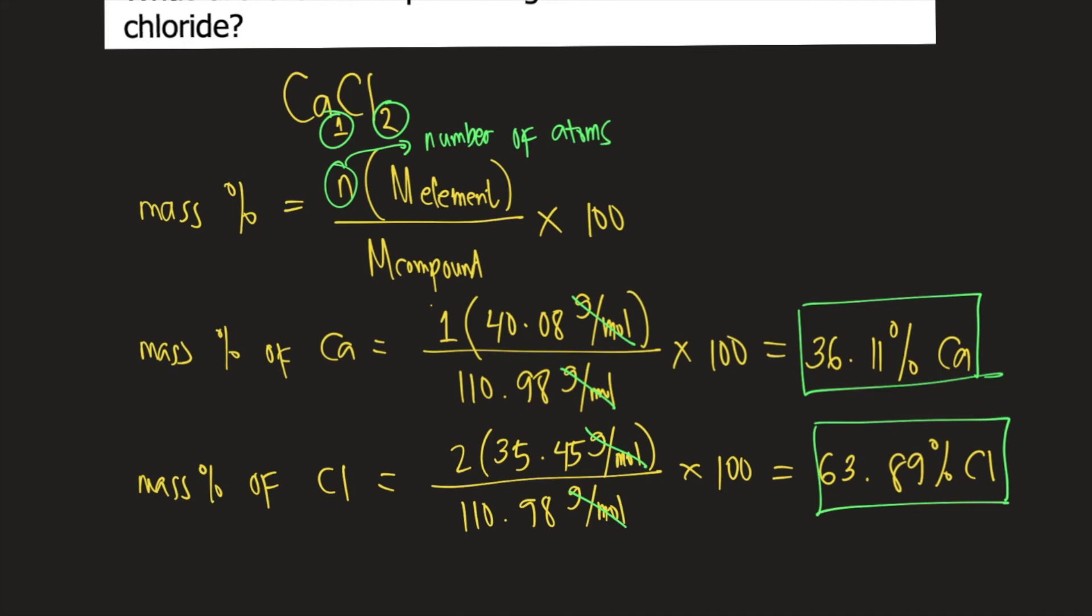So the answers to the question are 36.11% calcium and 63.89% chlorine.